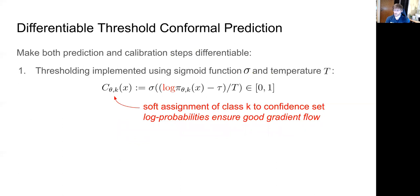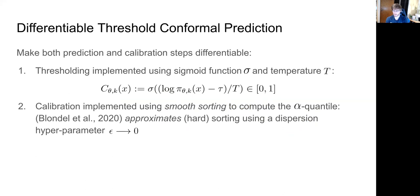The soft confidence set C is now a vector of soft assignments, where each element C_k indicates the probability of including class k in the confidence set. For the calibration step, we need a smooth alpha-quantile computation. Using smooth sorting approaches — for example the work by Blondel et al. — parameterized by epsilon, we can compute a differentiable quantile. As both t and epsilon approach zero, we recover the hard counterpart of the threshold conformal predictor on log probabilities.